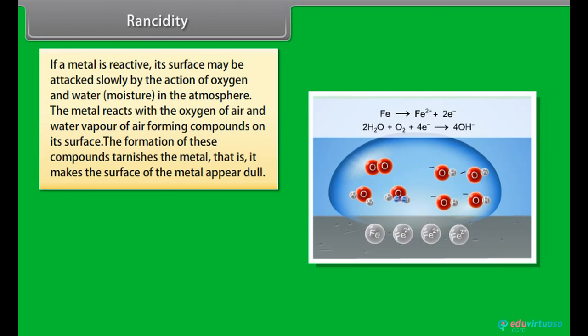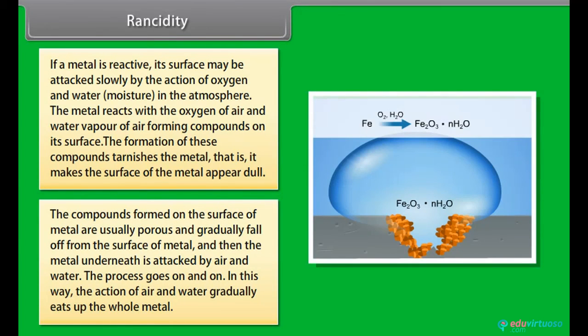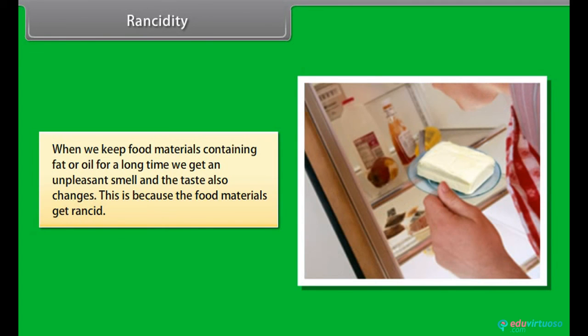Rancidity: If a metal is reactive, its surface may be attacked slowly by the action of oxygen and water in the atmosphere. The metal reacts with the oxygen of air and water vapor of air forming compounds on its surface. The formation of these compounds tarnishes the metal. That is, it makes the surface of the metal appear dull. The compounds formed on the surface of metal are usually porous and gradually fall off from the surface of metal. And then the metal underneath is attacked by air and water. The process goes on and on. In this way, the action of air and water gradually eats up the whole metal. When we keep food materials containing fat or oil for a long time, we get an unpleasant smell and the taste also changes. This is because the food materials get rancid.